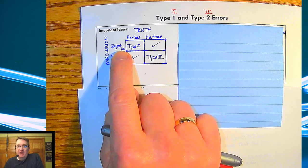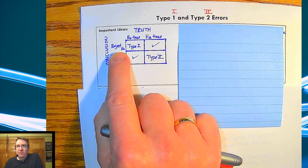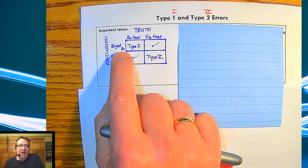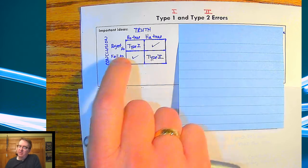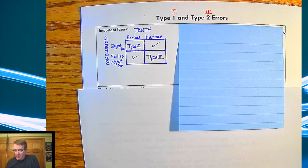So that means we're basically rejecting the truth. We're saying we have evidence that this is not true when in fact it is.